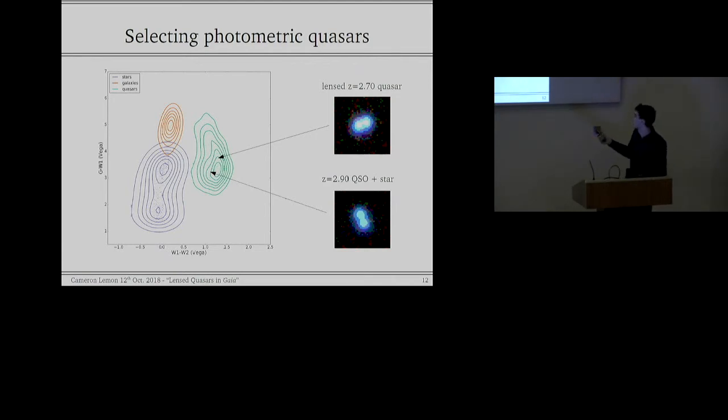And so if you take a contaminant system that's a QSO plus a star, the star contributes very little flux at the near infrared wavelengths. And so when it's blended together and catalogued, it really appears like a quasar source still, as a lensed quasar would. But we can actually use the Gaia positions to extract model photometry from WISE, if we know the PSF, which we do, to extract W1 and W2 for each of these components.